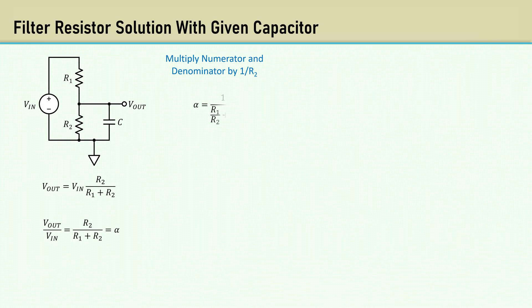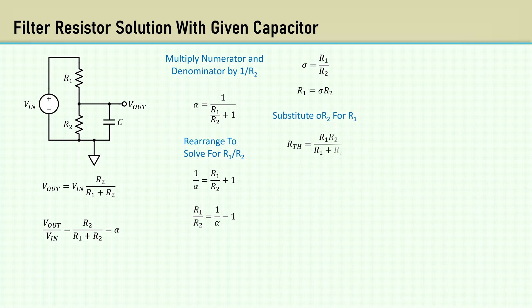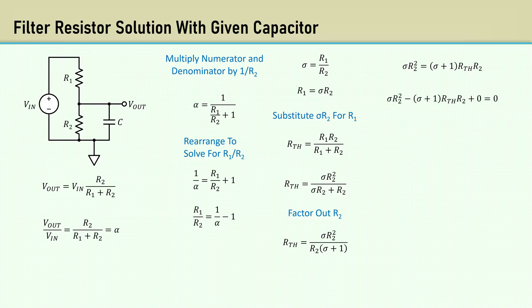Simplify alpha by multiplying the numerator and the denominator by 1 over R2. Rearrange to solve for R1 over R2. I'm calling sigma the ratio of R1 over R2. Then R1 equals sigma times R2. Then substitute sigma R2 in place of the occurrences of R1. Then factor out R2. It's clear to see this will be a quadratic, so I'll rearrange it and set it equal to 0.